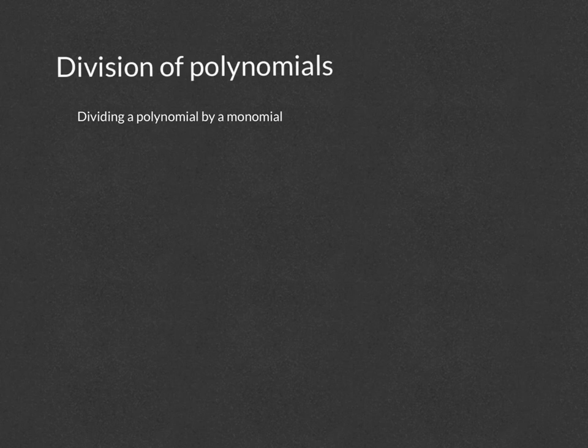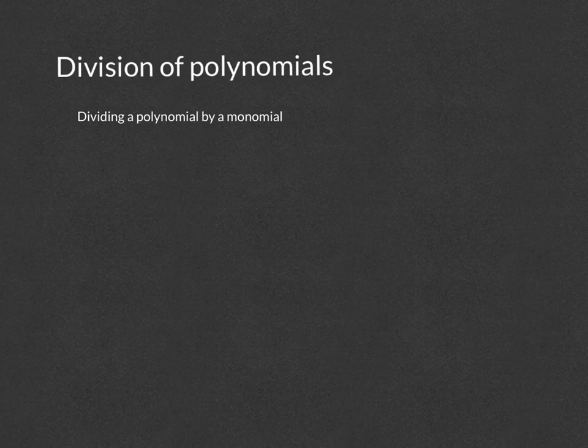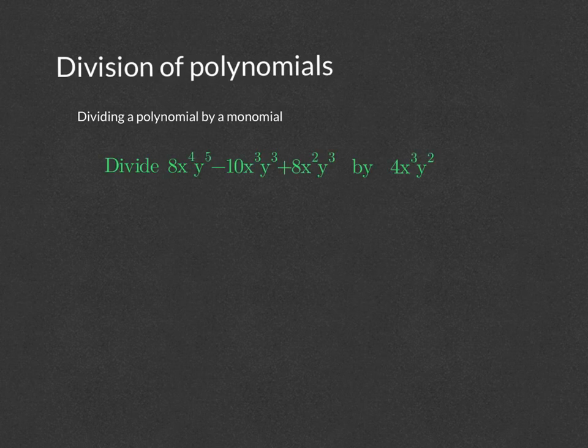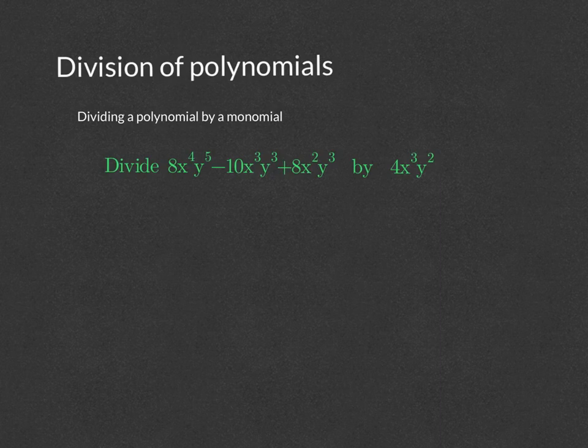Let's take a look at dividing polynomials. The first type is dividing a polynomial by a monomial. Remember that a monomial is a single-termed polynomial. So let's say we want to divide 8x to the fourth y to the fifth minus 10x cubed y cubed plus 8x squared y cubed. Remember that each term is separated by addition or subtraction.